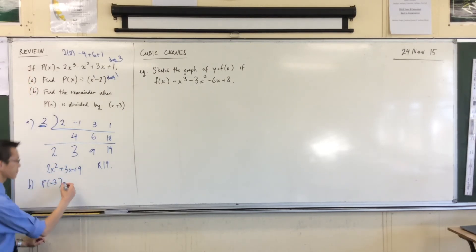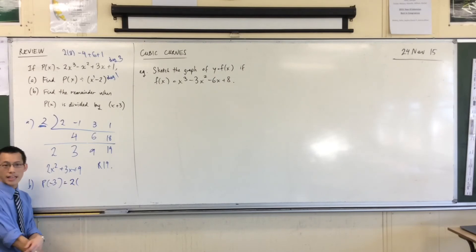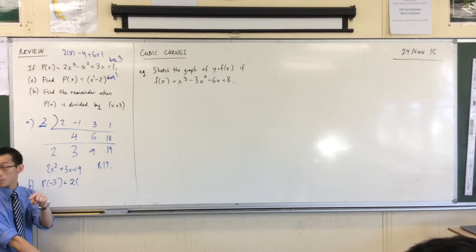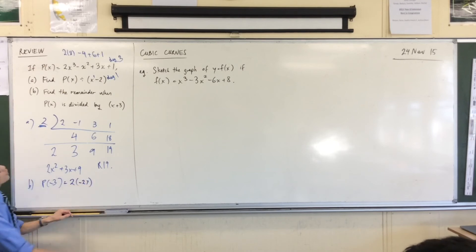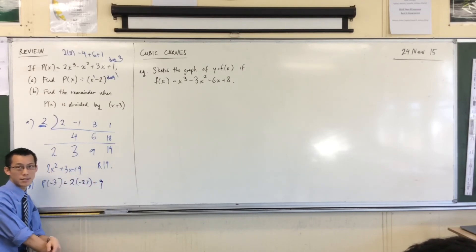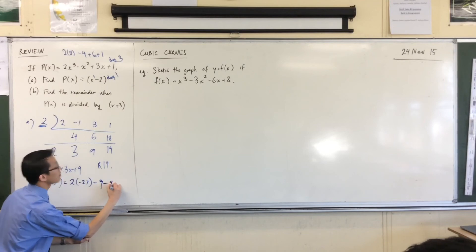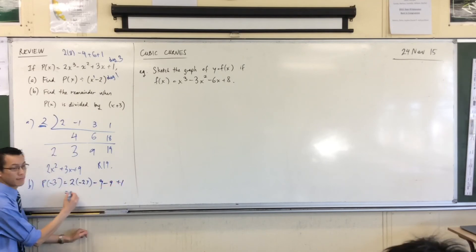So substituting in, that's 2 times, what is negative 3 cubed? Be careful, it's negative, right? You're going to have 3 minus signs, good morning. 3 minus signs, so it'll be negative 27, right? Good. Negative 3 squared is going to be 9, so minus 9. 3 times negative 3 is minus 9, and plus 1. There you go.